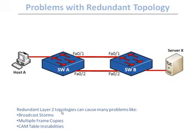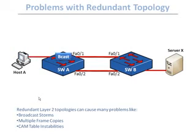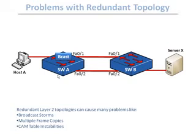Let's see what a broadcast storm actually means. Imagine host A sends a broadcast to everyone. When switch A receives that broadcast, by its nature as a switch, it must send the broadcast out all ports except the originating one — meaning it needs to send it through F01 and F02.